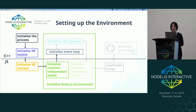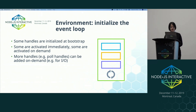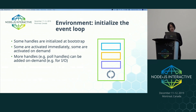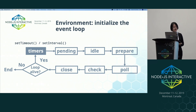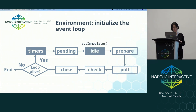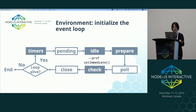After the runtime-independent components are initialized, we then move on to set up the event loop. At this point, we need to initialize a few handles. Some are activated immediately, some are activated on demand later. We only initialize a fixed number of handles during bootstrap; more handles, specifically the ones for I/O, are added on demand later. At bootstrap, we'll initialize one timer handle for setTimeout and setInterval, one idle handle for setImmediate, one prepare handle for idle notification for --prof, one check handle for --prof, and another for setImmediate to pair with other handles to work.